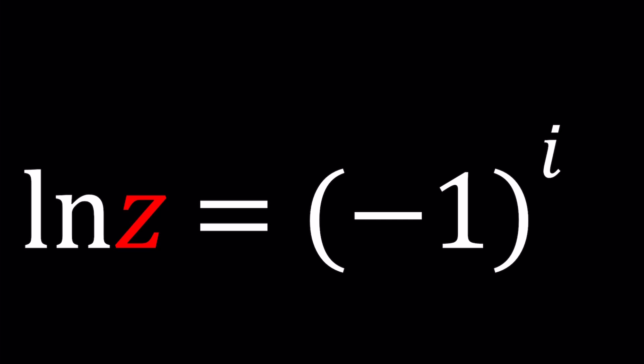One thing we know from real numbers, if you raise negative 1 to an even integer power, you get positive 1 or if you raise it to an odd power, you get negative 1. And if you raise it to the power 0, that's even, so you still get 1.